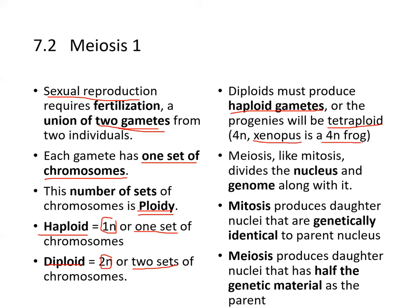Meiosis, like mitosis, divides the nucleus and genome. Mitosis produces daughter nuclei genetically identical to the parental nucleus, whereas meiosis produces daughter nuclei with half the genetic material of the parent.